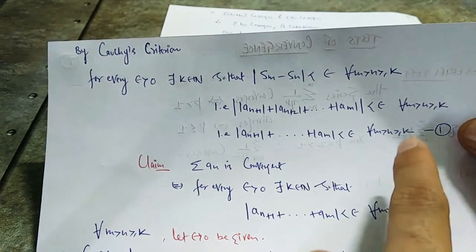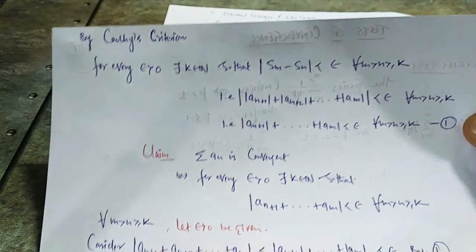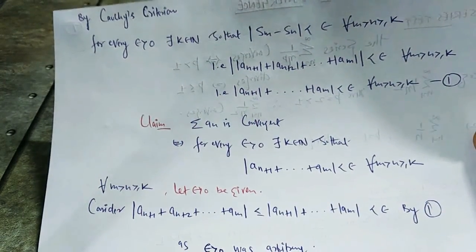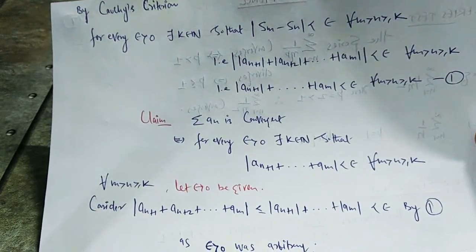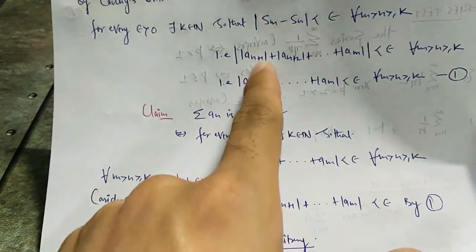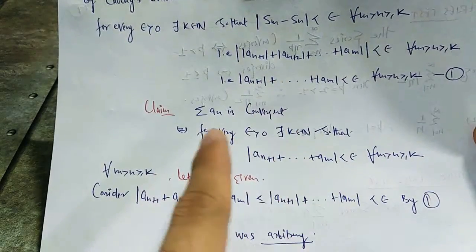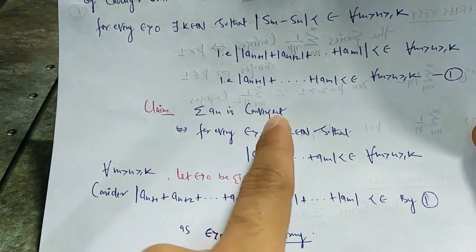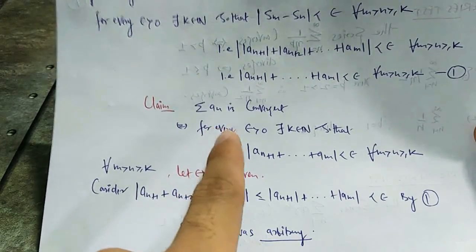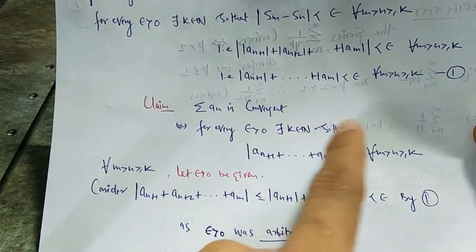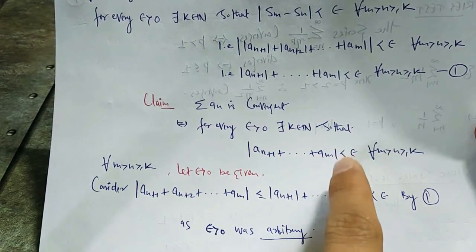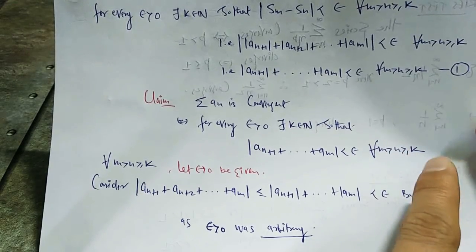For all m > n and n ≥ k — mark this as equation number 1. Here we had one extra modulus, which we can simply ignore because the quantities inside are already positive, so adding an extra modulus does not change the result. Our claim is to show series aₙ is convergent, so using Cauchy's criterion: for every ε > 0 there exists a natural number k such that |aₙ₊₁ + aₙ₊₂ + ... + aₘ| < ε for all m > n and n ≥ k.